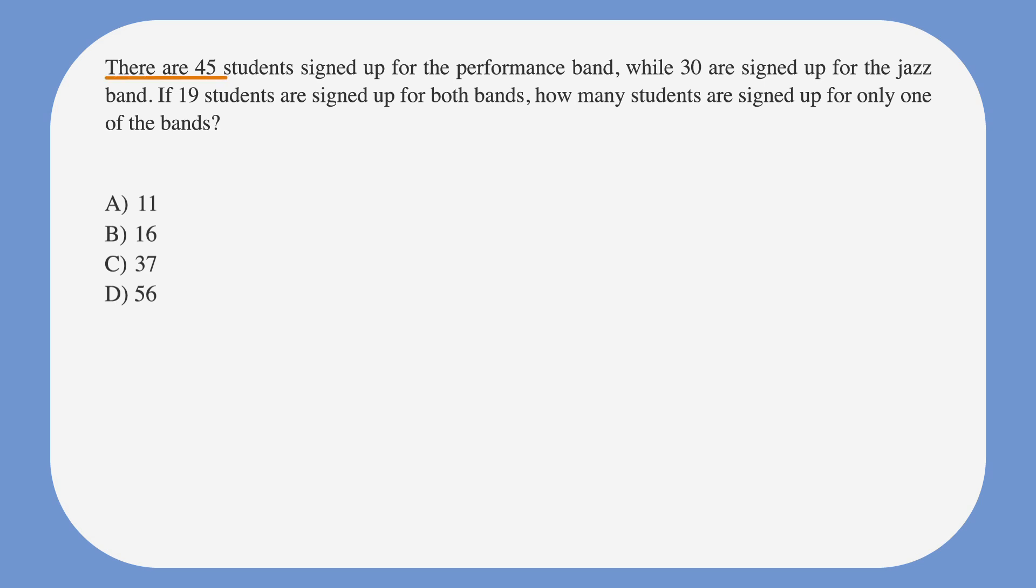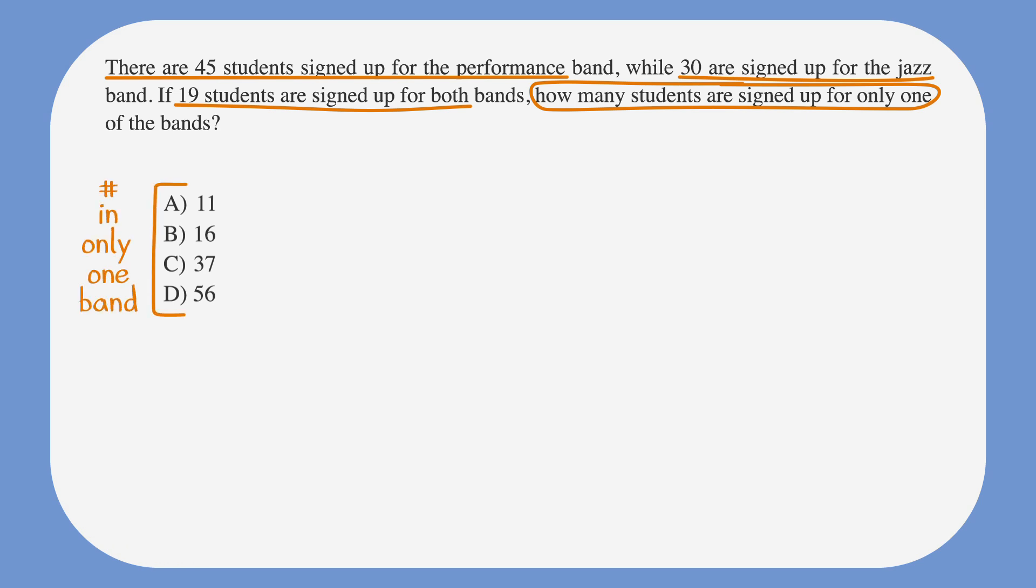We'll underline the facts, circle key terms, and label the answer choices, which are possible values for the number of students signed up for only one band. So we know this calls for a Venn diagram because we're given two categories of students and the word both.